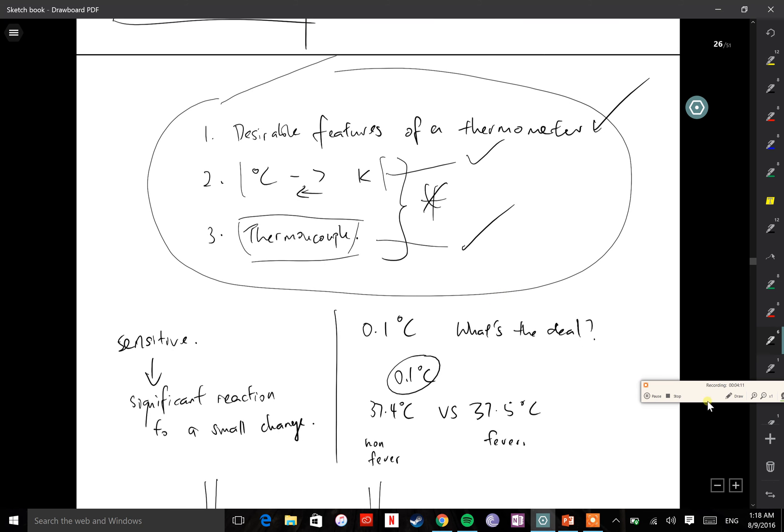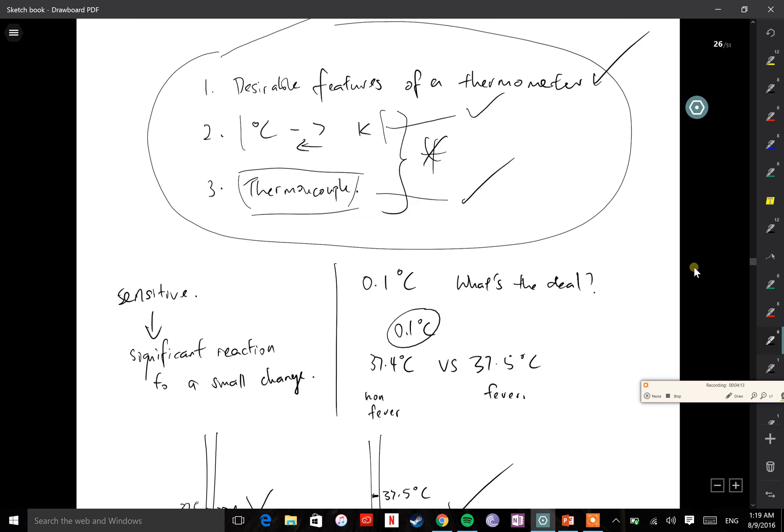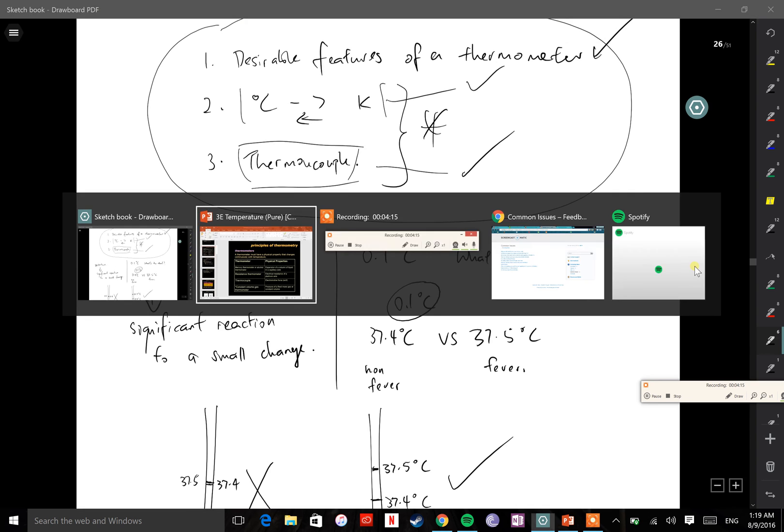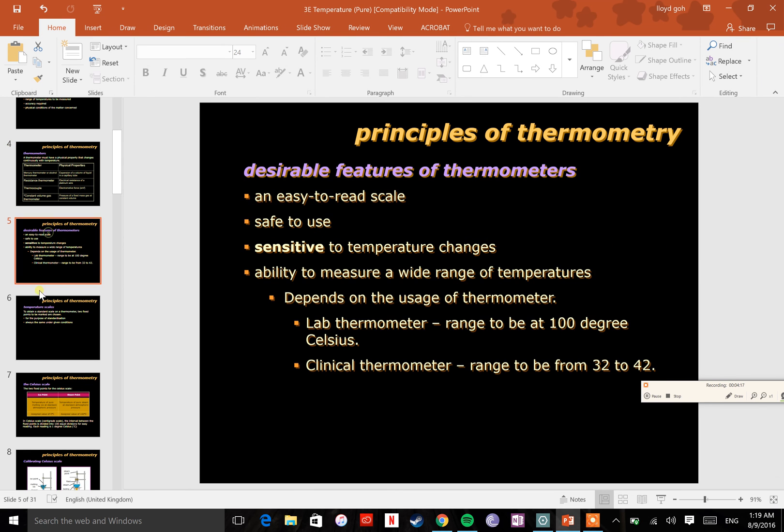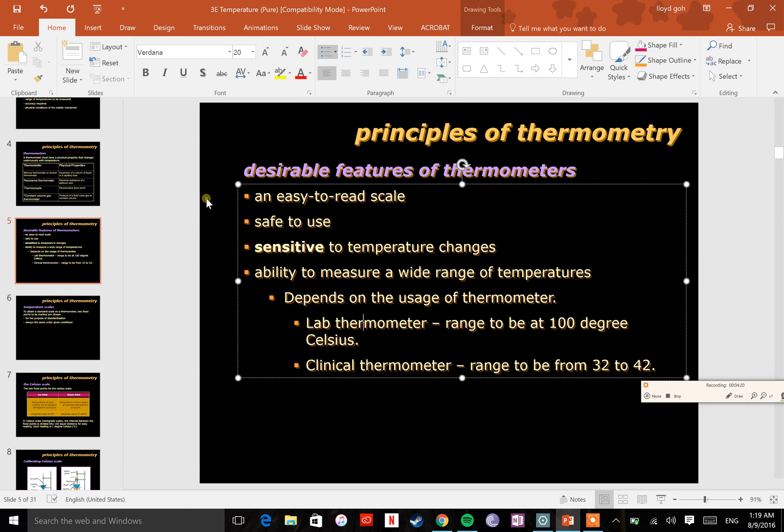That's it for the recap. Now, it's the four-minute mark, so I'll start on the desirable features of a thermometer. There are a few things we want: an easy-to-read scale, safe to use, sensitive, and the ability to measure wide range. I'll talk about sensitive in a while. Let's talk about range first.